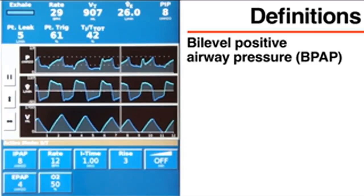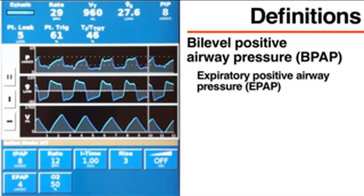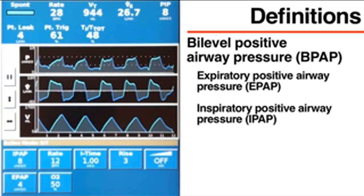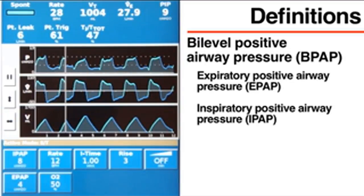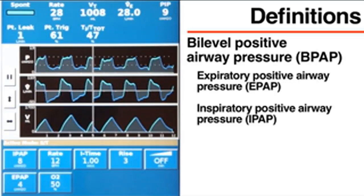In BPAP, the ventilator cycles between two pressures, delivering an expiratory positive airway pressure, or EPAP, during expiration, and a higher inspiratory positive airway pressure, or IPAP, during inspiration. The difference between EPAP and IPAP provides pressure support to the patient, thereby increasing tidal volume and directly supporting ventilation.